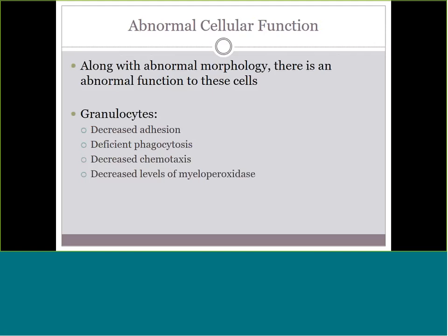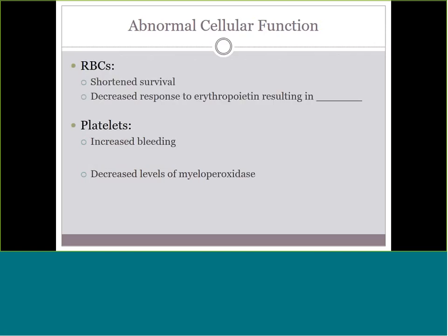Beyond abnormal morphology, these cells also don't function normally. Granulocytes perform poor phagocytosis and have poor chemotaxis — they don't respond or send chemical signals well. Red cells don't respond well to erythropoietin, so red cell production is impaired, leading to anemia — which is definitely seen in these disorders. Platelets don't perform properly either, leaving patients prone to bleeding.